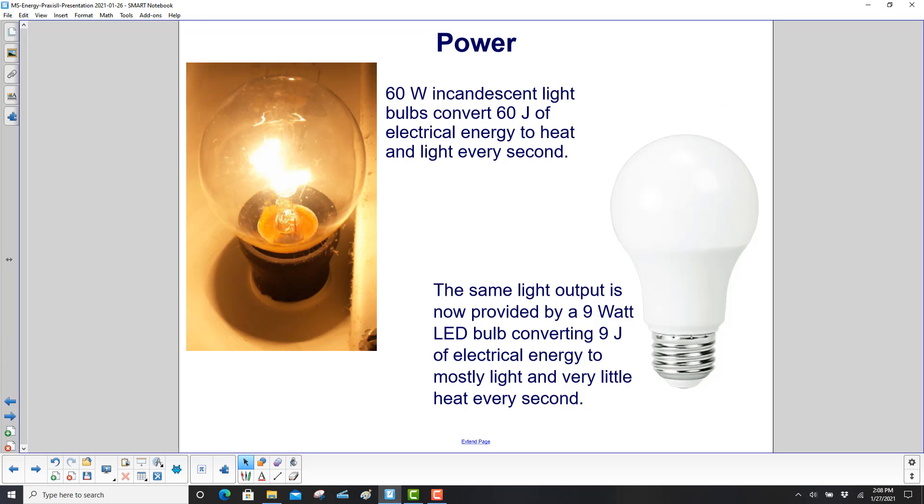60 watt incandescent light bulbs convert 60 joules of electrical energy to heat and light every second. The same light output is now provided by a 9 watt bulb. Here we are at 60, now you only need 9 watts, and that converts 9 joules of electrical energy to mostly light and very little heat in every second. So, much better here, right? Because you don't need the heat, you just want the light.